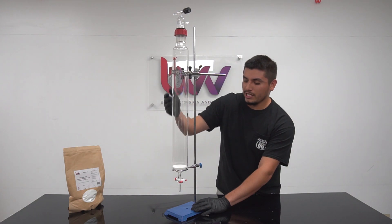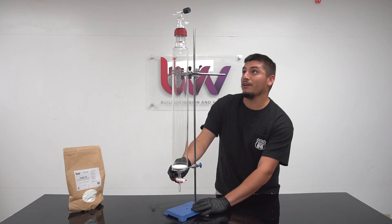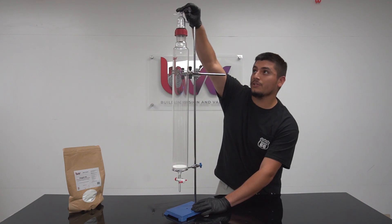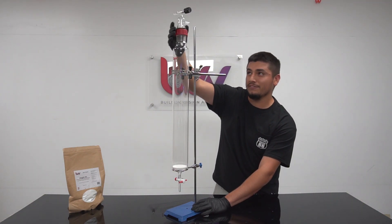It features a 3 by 24 column with center disc and stopcock at the bottom. On the top you have a valve with needle control as well as a rodaviss joint.